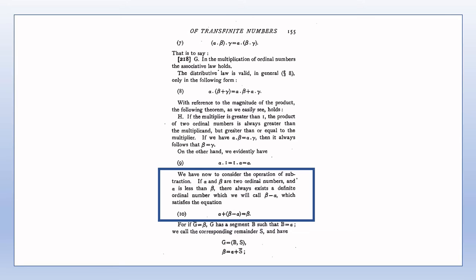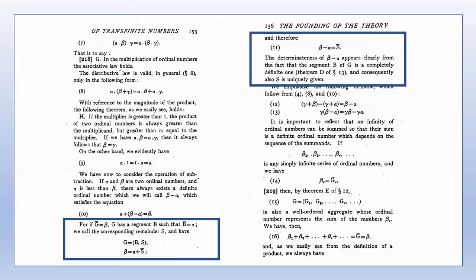The uniqueness of β − α as the solution to the equation follows from Theorem D of this section. Thus it is not possible to say, for example, that β − α equals −α + β, or that α + (β − α) equals α + β − α, or any similar rearrangements valid in elementary arithmetic. Rather than viewing the equality in point 10 as a cancellation of α, I personally view it as replacing the symbol α + (β − α) in any expression with the equivalent expression β. The remainder S is a well-ordered aggregate since it is a part of a well-ordered aggregate G; therefore, its ordinal type is in fact an ordinal number, which is denoted by β − α.